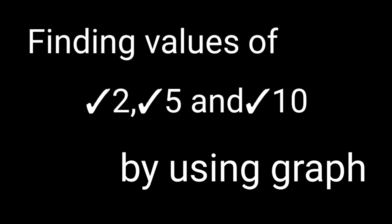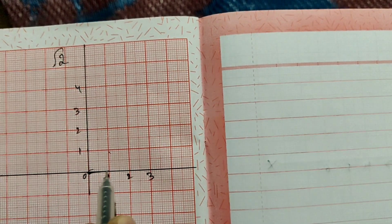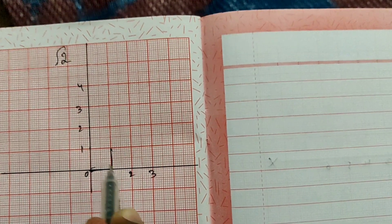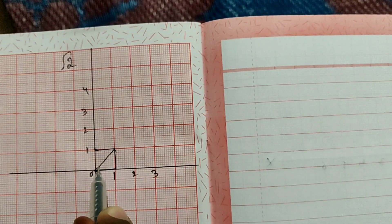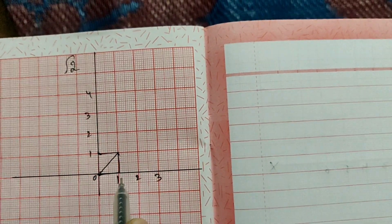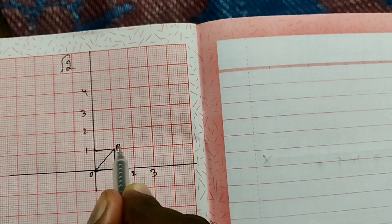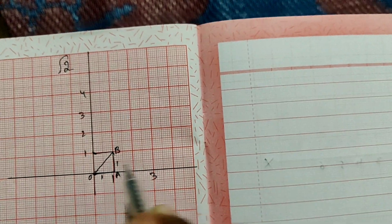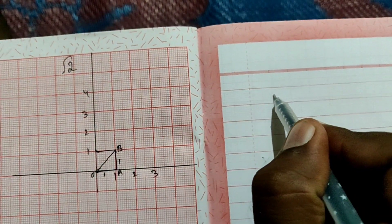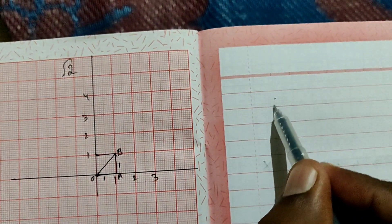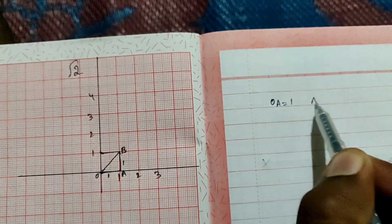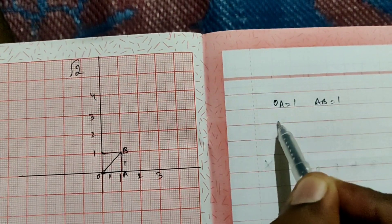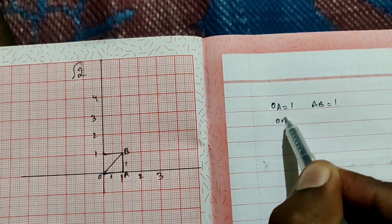First of all, coming to root 2. Taking the x-axis and y-axis, mark 1 unit on the x-axis and 1 unit on the y-axis, then draw the diagonal. Take the origin as O and the corner point as A and B. OA is equal to 1 and AB is equal to 1.